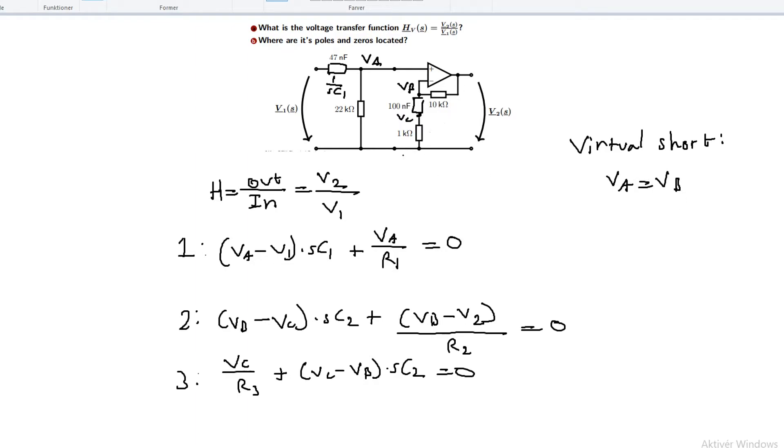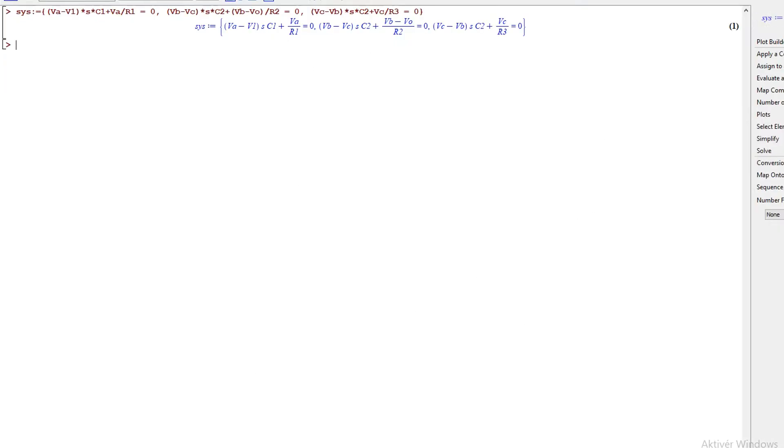So we have that va is equal to vb. This is true because there's negative feedback. If there were positive feedback this would not hold. So we now have one less variable to work with. We go back in Maple and now we can solve the equation. We update the system of equations like this, and then we solve for the unknowns. There are three unknowns: vb, vc, and v2.